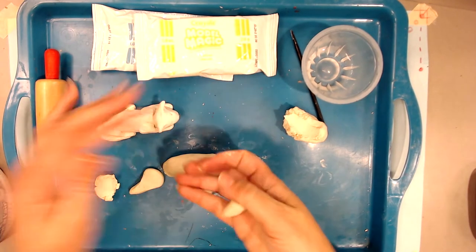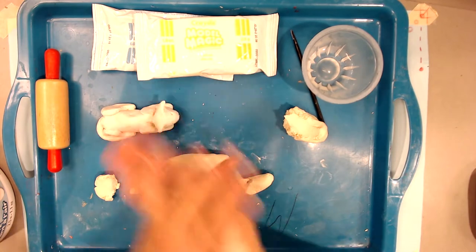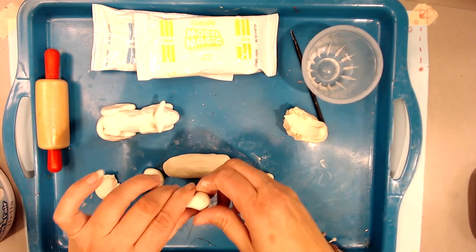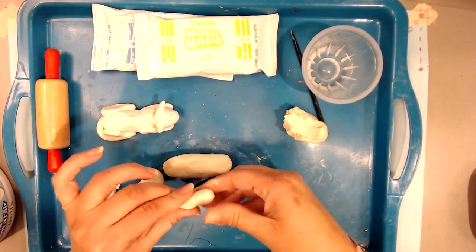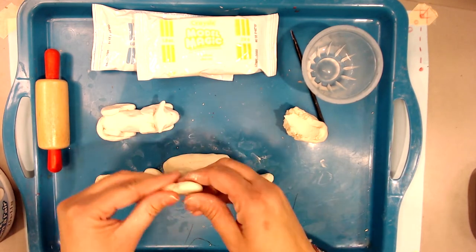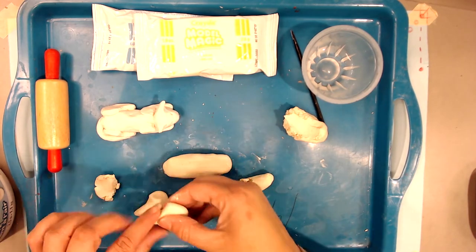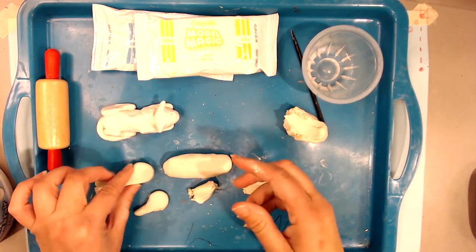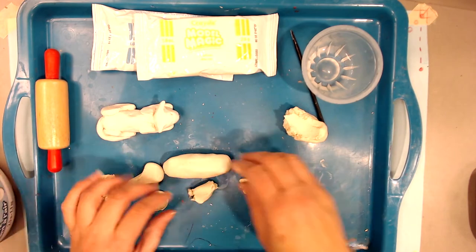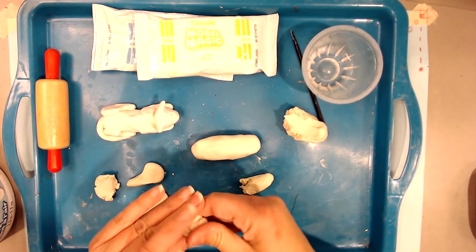So that would be one back leg. Let me do that again. Make a ball, squish it flat and pull out the section for the lower leg and the paw. They're about the same size. If yours are really different, you could take a pinch of clay off, start over, ball it back up and get them closer in size.